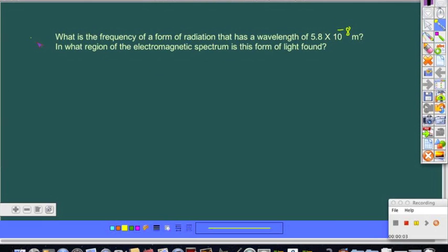In this next example, we are asked to find what is the frequency of a form of radiation that has a wavelength of 5.8 times 10 to the negative eighth meters.